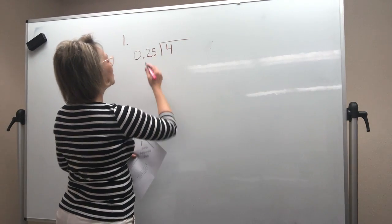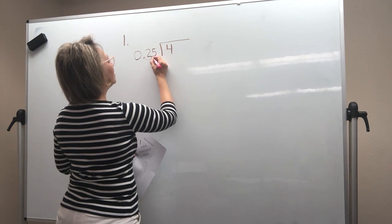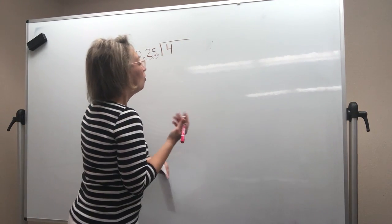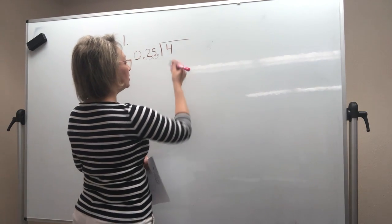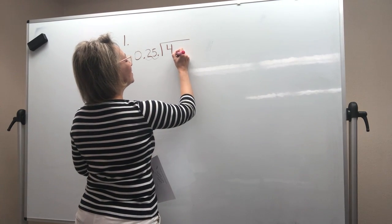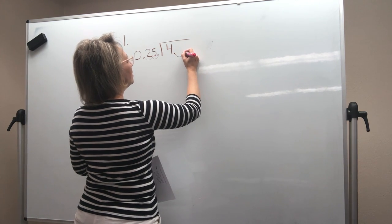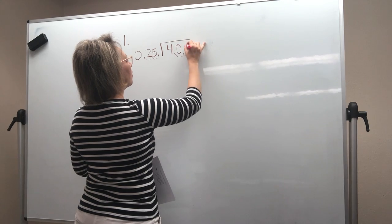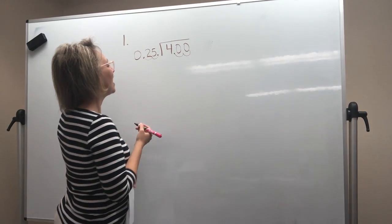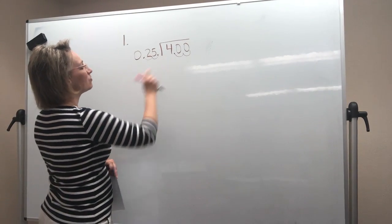So when we move our decimal, we go 1, 2, it's going to go 2 to the right. Well, there's no decimal on this whole number. There is, it's invisible. Remember, it would be right there at the end of it. So I'm going to go 1, 2 right here. So that changed this inside number to 400.